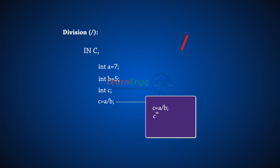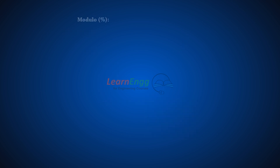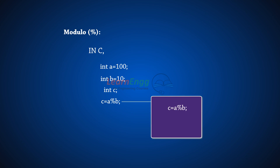To divide one number by another, use the divide operator. For example, 7 divided by 5 is 1.4, but since C is an integer variable, it will convert the floating value into an integer value, so C equals 1. The modulo operator returns the integer remainder of a division. For example, 100 modulo 10 equals 0, because the remainder of 100 divided by 10 is 0.